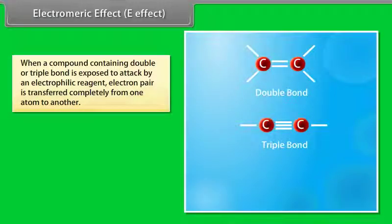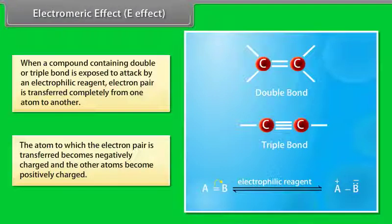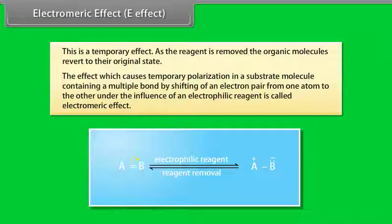Electromeric effect (E effect) — when a compound containing a double or triple bond is exposed to attack by an electrophilic reagent, the electron pair is transferred completely from one atom to another. The atom to which the electron pair is transferred becomes negatively charged and the other atom becomes positively charged. This is a temporary effect; as the reagent is removed, the organic molecule reverts to its original state. This temporary polarization under the influence of an electrophilic reagent is called the electromeric effect.